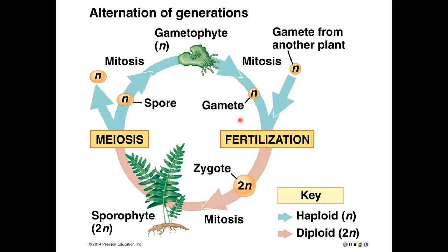These gametes can then fuse in fertilization — ideally gametes from different plants so we can get some sexual recombination. The process of fertilization brings us back to a diploid state, and that first cell formed by the fusion of gametes is the zygote. That zygote divides by mitosis to produce the multicellular diploid sporophyte, and then we've come full circle.